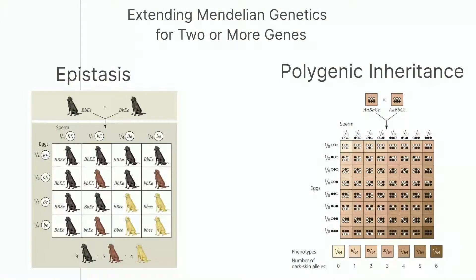Selanjutnya ada epistasi. Gen di satu lokus mengubah ekspresi fenotip pada lokus kedua. Contohnya pada Labrador Retriever, warna rambut tergantung pada dua gen. Satu gen menentukan warna pigmen, dengan alel B untuk hitam dan b untuk coklat. Gen lain dengan alel C untuk warna dan c tanpa warna, menentukan apakah pigmen akan disimpan pada rambut atau tidak.